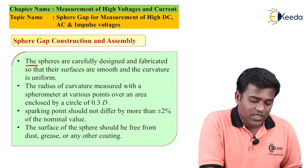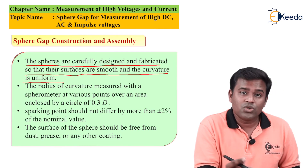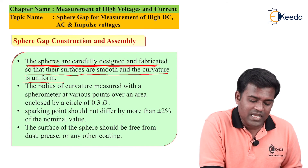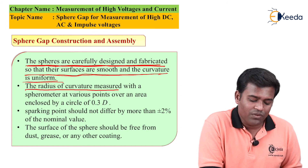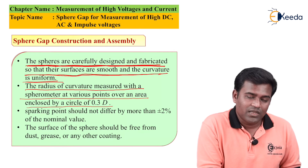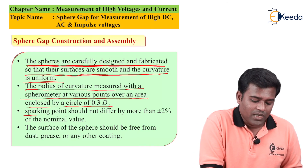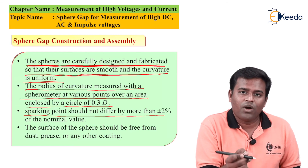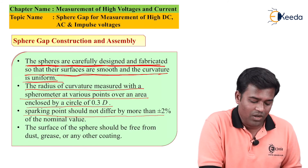The spheres are carefully designed and fabricated so that their surfaces are smooth and the curvature is uniform. The radius of curvature, measured with a spherometer at various points over an area enclosed by a circle of 0.3D (where D is the diameter of the sphere), should not differ by more than plus or minus 2% from the sparking point nominal value.